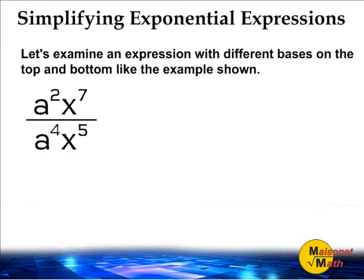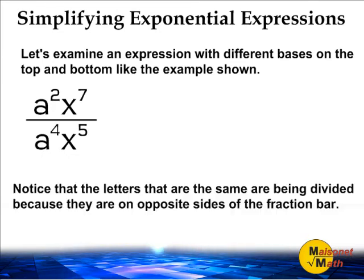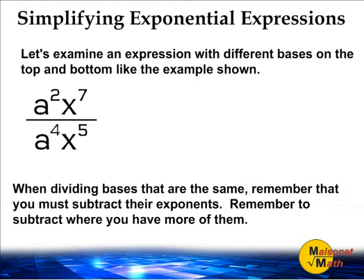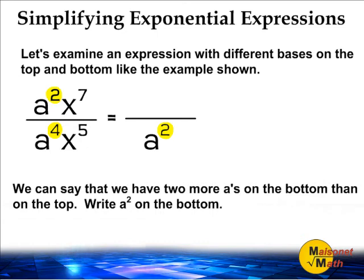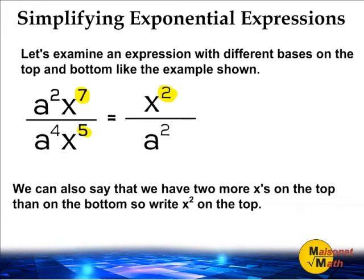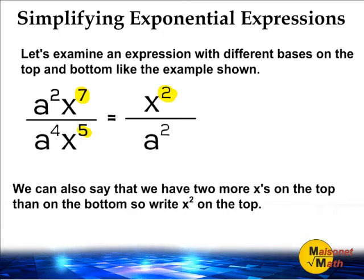Let's examine an expression with different bases on the top and bottom. Notice that the letters that are the same are being divided because they are on opposite sides of the fraction bar. When dividing bases that are the same, remember that you must subtract their exponents where you have more of them. We can say that we have two more a's on the bottom than on the top, so write a to the second power on the bottom — all of the a's on the top will cancel out. We can also say that we have two more x's on the top than on the bottom, so write x to the second power on the top — all of the x's on the bottom will cancel out. You would cancel out five x's on the bottom and five x's on the top, so two x's on the top would remain, which is why we write x to the second power for our numerator.